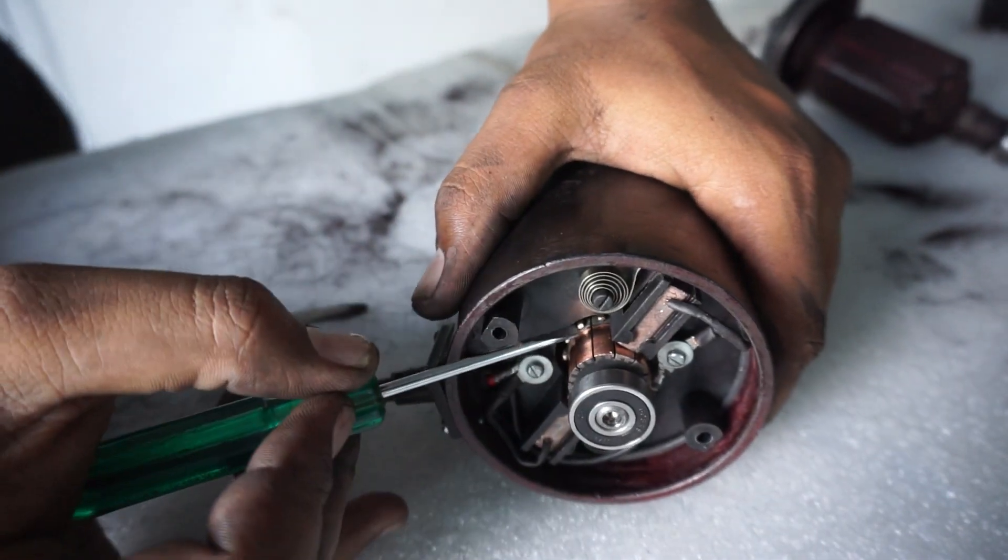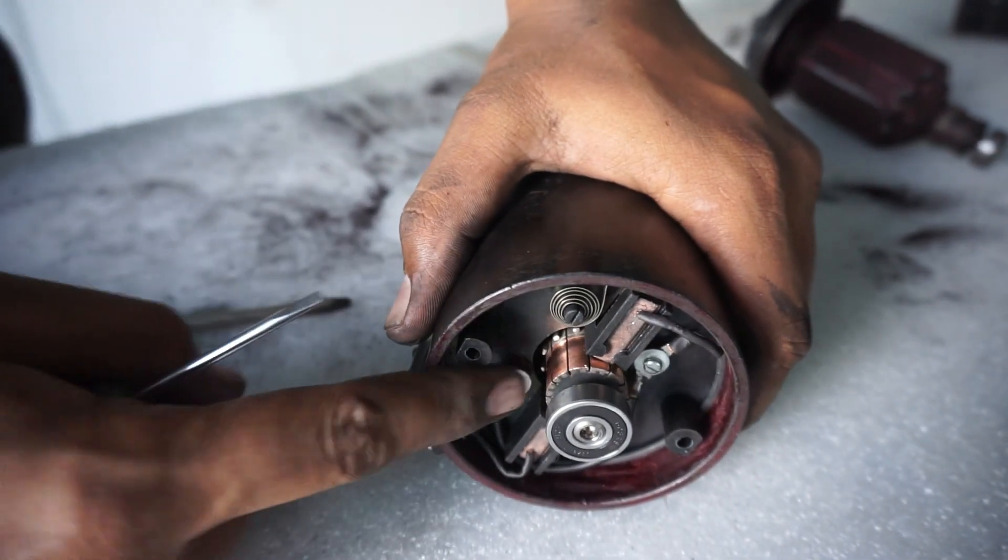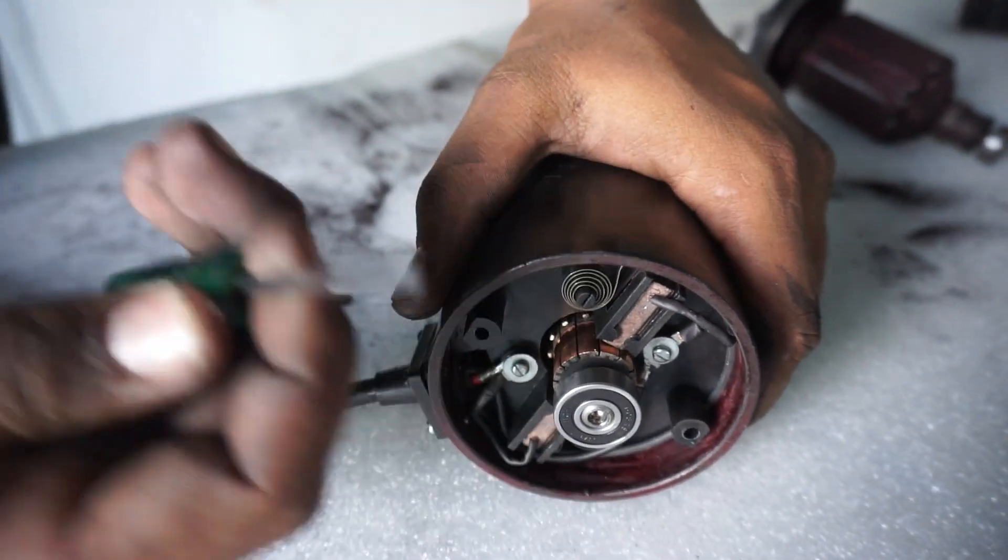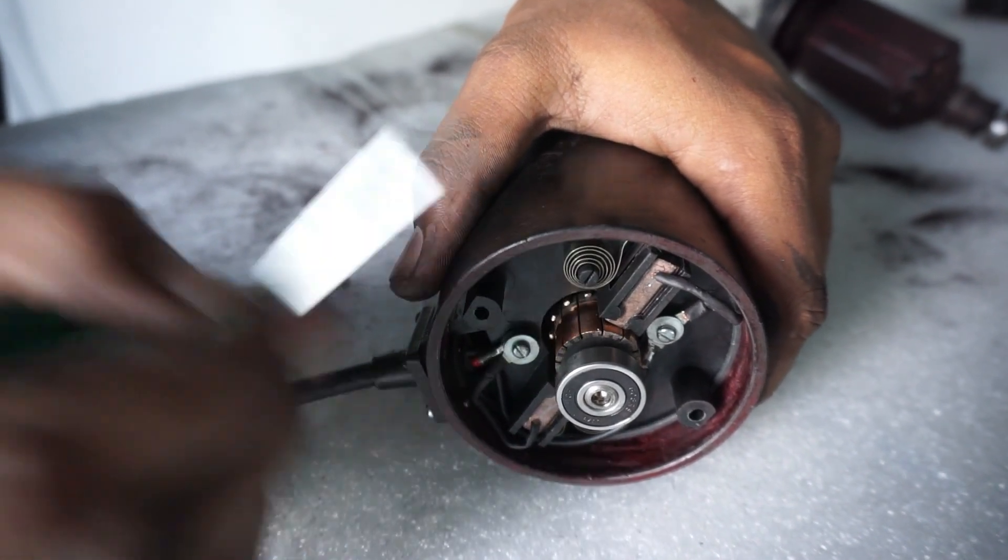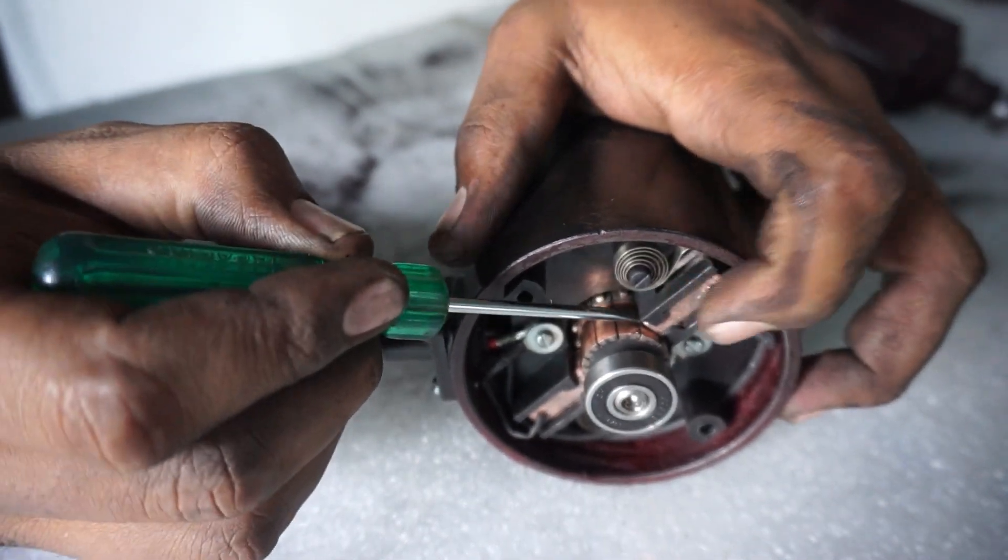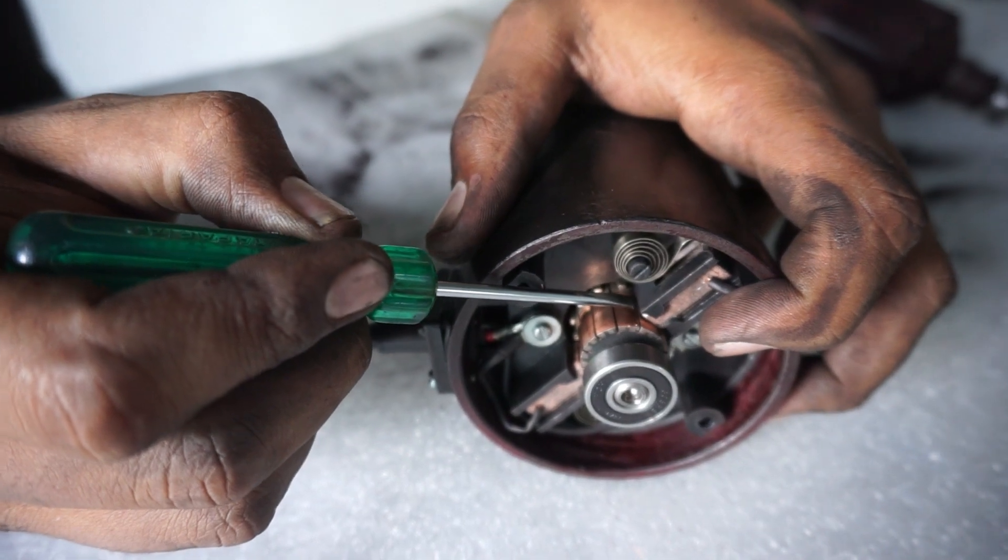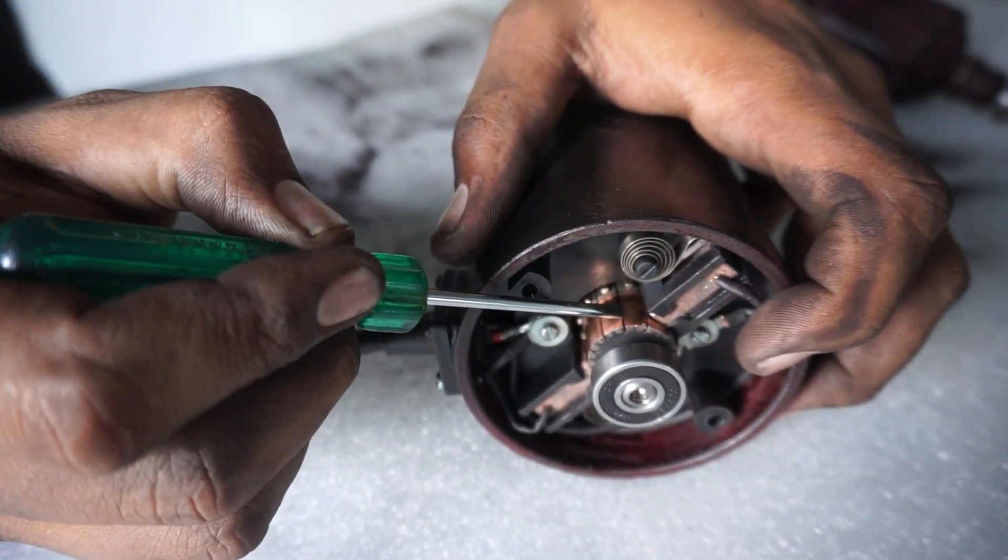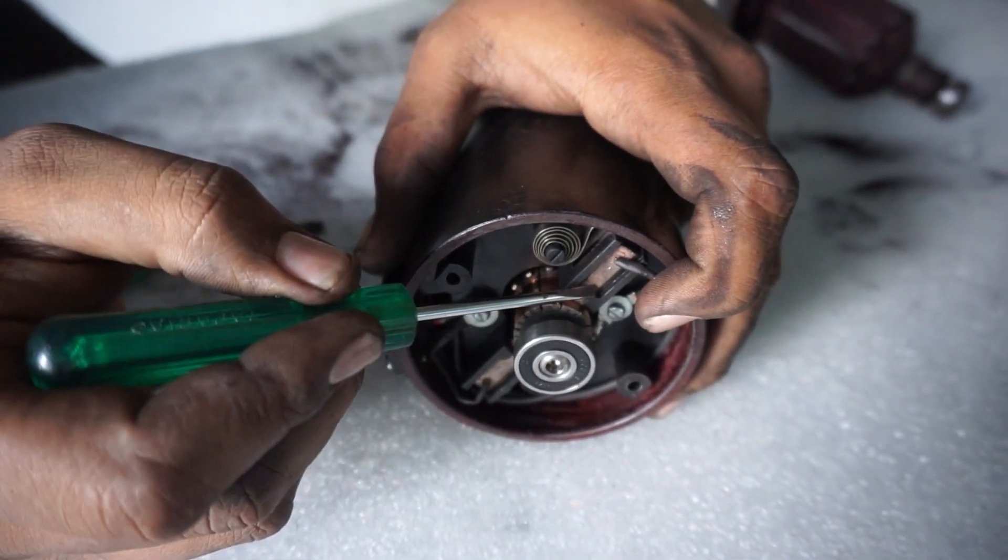While placing the carbon brushes on the spring, avoid scratching the commutator with the screwdriver, as it could increase the wear of the carbon brushes due to arcing between the commutator and the carbon brush. The same applies to the carbon brush. Avoid scratching or damaging the surface of the carbon brush that is in contact with the commutator, as it may lead to excessive sparking between the brush and the commutator, which will reduce the life of the motor.